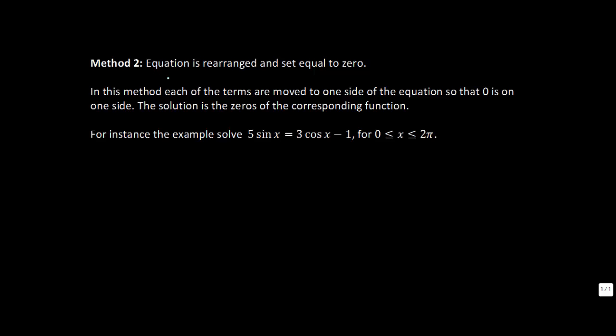And so method two says that we are going to rearrange and set equal to zero. So we're going to take this equation and we will rearrange it such that it is set equal to zero. So I'm going to move everything on the right hand side to the left hand side. So that would turn this equation now into being 5 sine of x minus 3 cosine of x plus 1 is equal to 0.